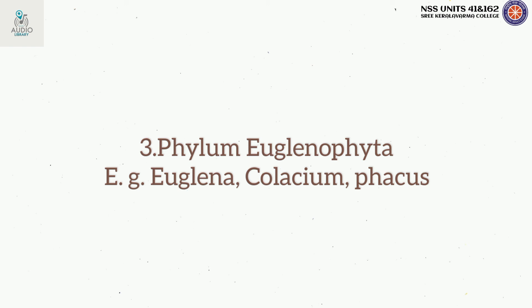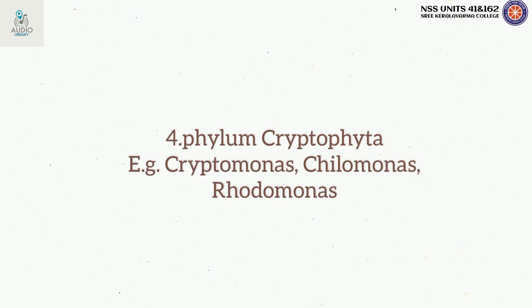Euglenophyta is a small group of unicellular, green or non-green, aquatic protophytes living mostly in freshwater. Their nutrition is mixotrophic, including photosynthetic, saprotrophic, and other modes.